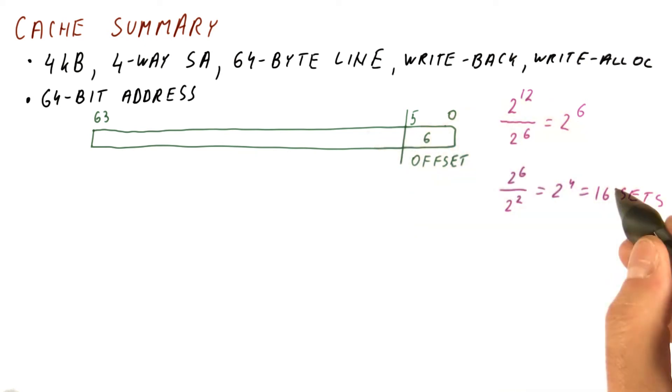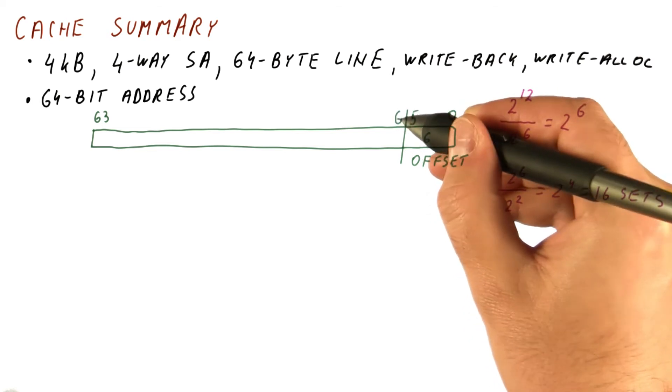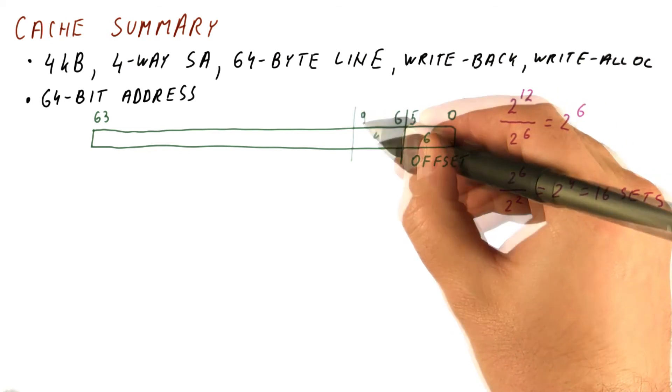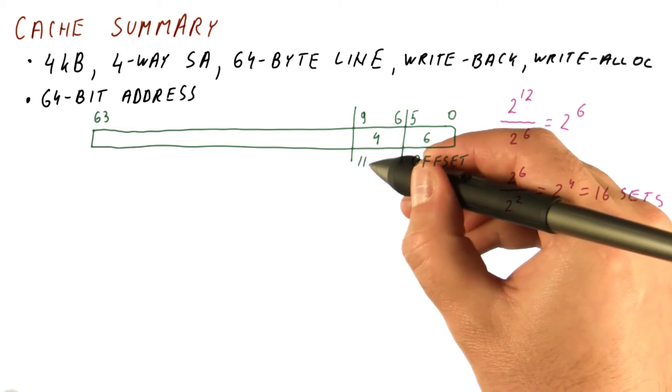Now we know that we need four bits to tell us which set we are in. So bits six, seven, eight, and nine, four of them are the index.